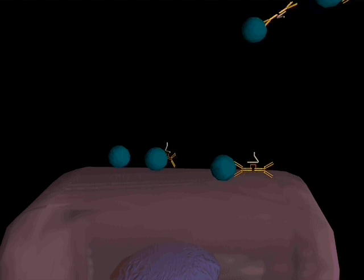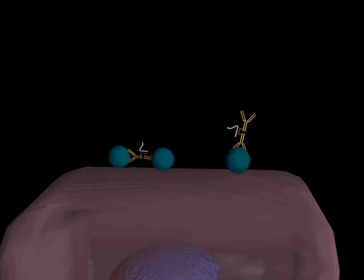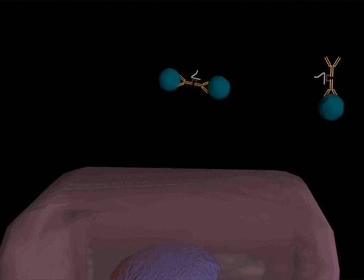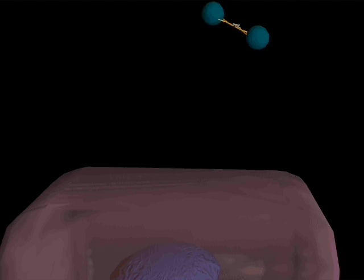When the IgA encounters a bacterium, it can bind to its surface receptors. This prevents the bacterium from attaching to the epithelium, and it is washed away by the passing fluid.